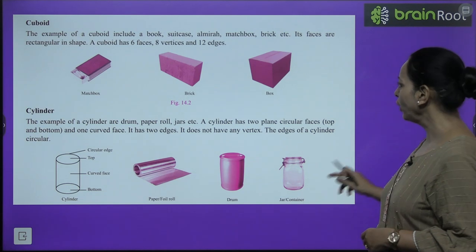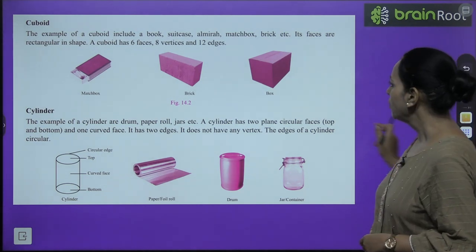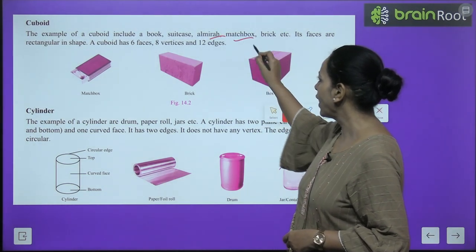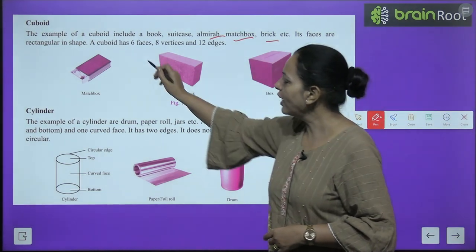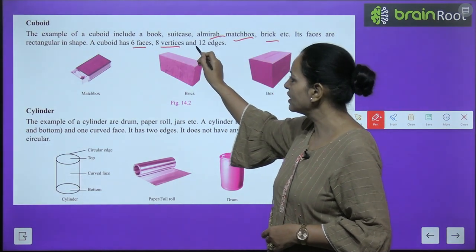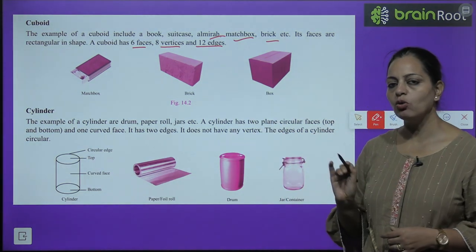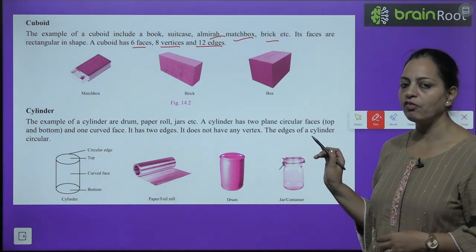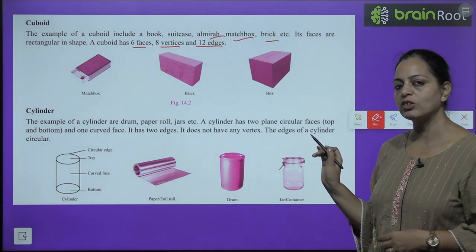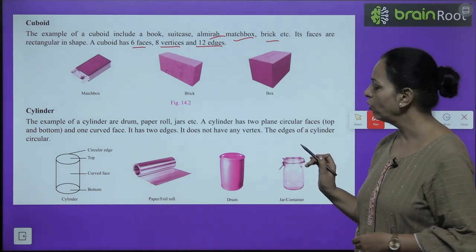Cuboid: The examples of a cuboid include a book, suitcase, almira, matchbox, brick. Its faces are rectangular in shape. A cuboid has 6 faces, 8 vertices, and 12 edges - same as a cube. But the difference in a cuboid is that each face is a rectangle.